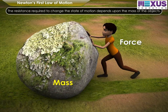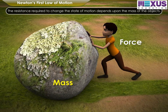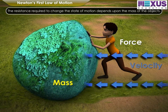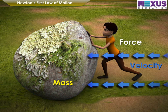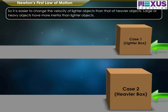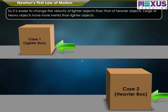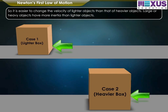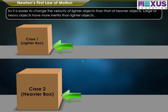The resistance required to change the state of motion depends upon the mass of the objects. So it is easier to change the velocity of lighter objects than that of heavier objects. Large or heavy objects have more inertia than lighter objects.